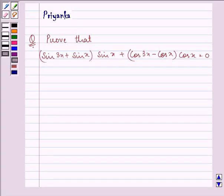Hi and welcome to the session. Let us proceed with the solution. It says, prove that sin 3x plus sin x multiplied by sin x plus cos 3x minus cos x multiplied by cos x is equal to 0.